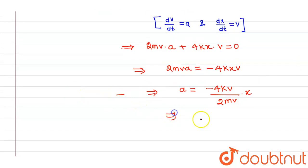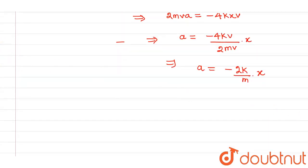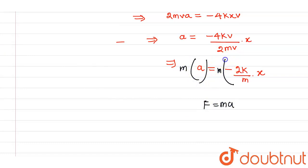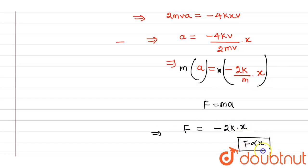Rearranging, acceleration a = −(2k/m)·x. From Newton's second law, force equals mass times acceleration, so multiplying both sides by mass m gives force = −2kx. This implies force is directly proportional to displacement, hence this motion is simple harmonic motion.